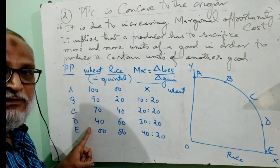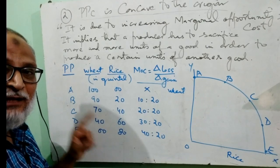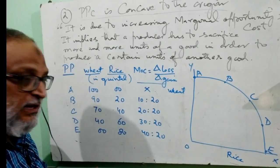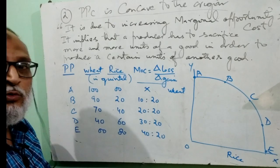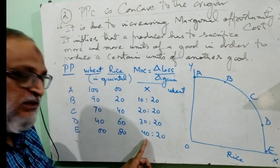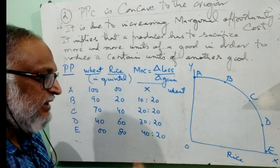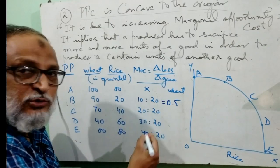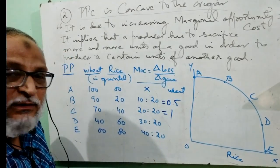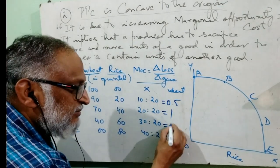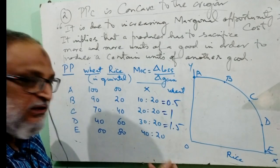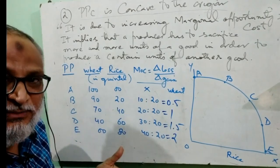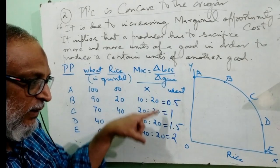Now he is sacrificing 30 quintals of wheat and is able to produce 20 quintals of rice. And the final option left with him is not to produce any quantity of wheat — he has sacrificed the whole 40 quintals of wheat and is now able to produce 20 more quintals of rice. So observe: MOC, which we also call MRT, is increasing — 10:20 = 0.5, then 20:20 = 1, then 30:20 = 1.5, and finally 40:20 = 2. MOC is increasing: 0.5, 1, 1.5, and 2.